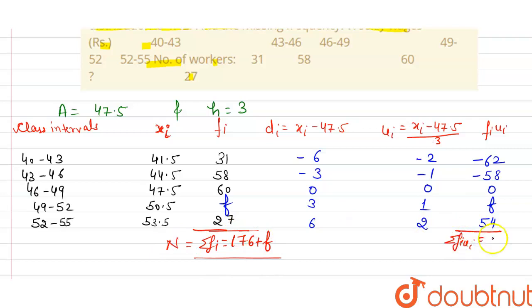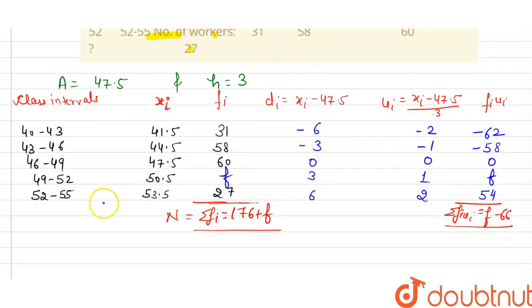And the formula for calculating the mean is: x̄ = A + h × (1/n) × Σfi*ui. This is the formula.